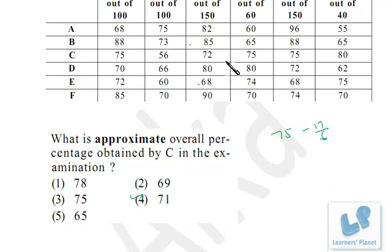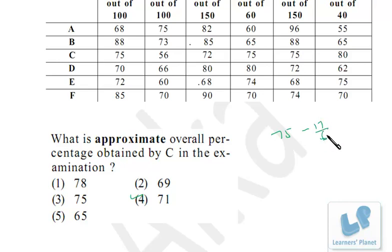So precisely, we assume the mean to be 75, calculate the deviation, find the average deviation, and deduct or add it from the assumed mean. Because the deviation is negative, we deduct it. If it were positive, we'd add it. This way you save time because you don't have to add up all the numbers directly.